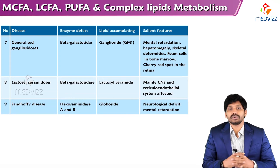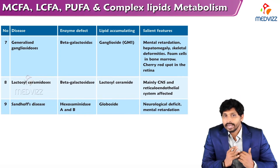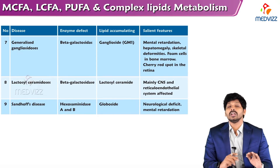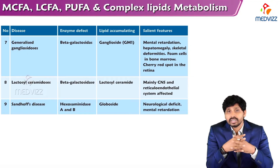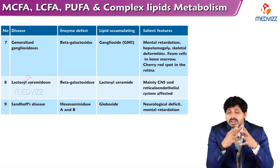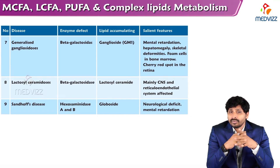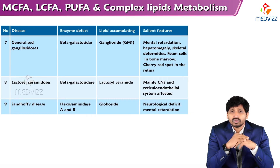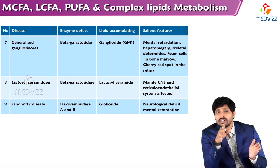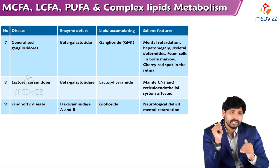The seventh is generalized gangliosidosis, caused by deficiency of beta-galactosidase. The lipid accumulating is ganglioside GM1 type, whereas in Tay-Sachs it is GM2. Features are mental retardation, hepatomegaly, skeletal deformities, foam cells in bone marrow, and cherry red spot in the retina. Common features across lipid storage disorders include mental retardation, hepatomegaly, and cherry red spot in macula.